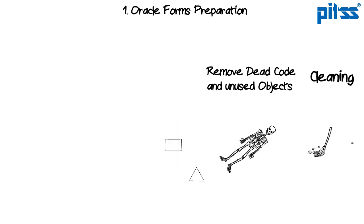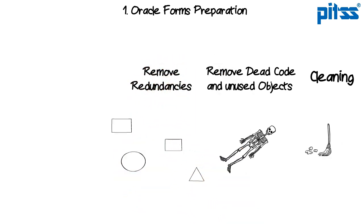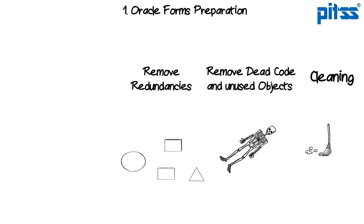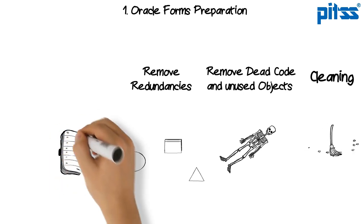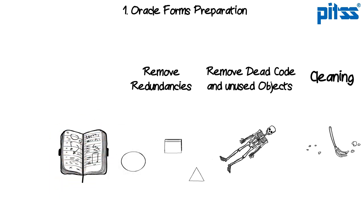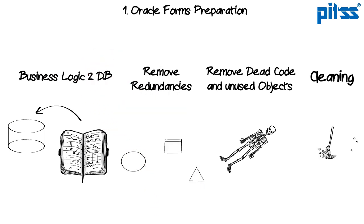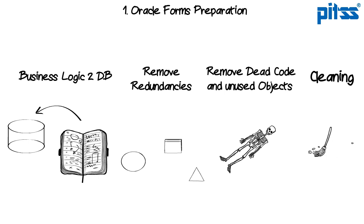The second step is a reduction of redundancies. Over time, some program units have been copied and pasted into other modules. With some small adjustments, you can consolidate the duplicates and move them into a library. A lot of Forms applications are around 10 years old or even older. In these years, there was a big investment into PL/SQL code. The best way to preserve this investment is to move the business logic into the database. Of course, this isn't the perfect JEE architecture, but in real life it has been proven to be a good compromise. When you now create web services on the stored procedures, you can integrate your Forms application into a service-oriented architecture.